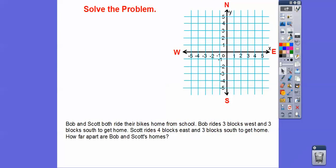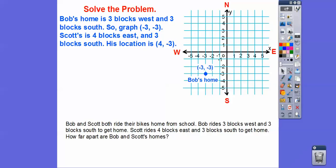So here it is right here. Bob's home is 3 blocks west and 3 blocks south. So these are going by 1, so we're going to go 3 squares to the left and then 3 squares down right there. So there's Bob's home at (-3, -3). And then Scott goes 4 blocks east and then 3 blocks south. So we're going to go 4 blocks east, which is 4 squares, and then 3 blocks south. So there's Scott's home right there.